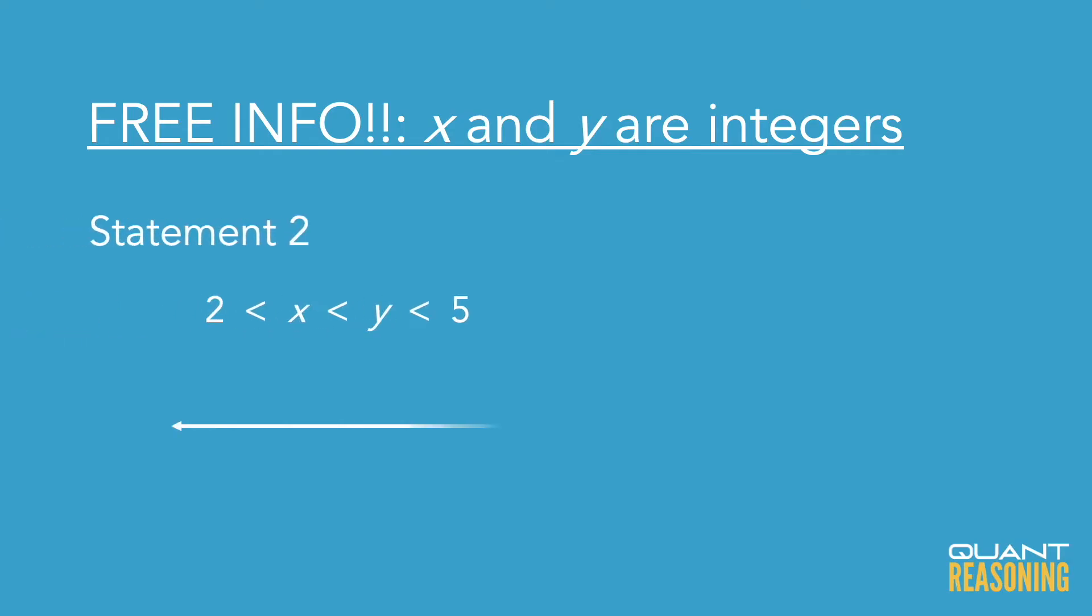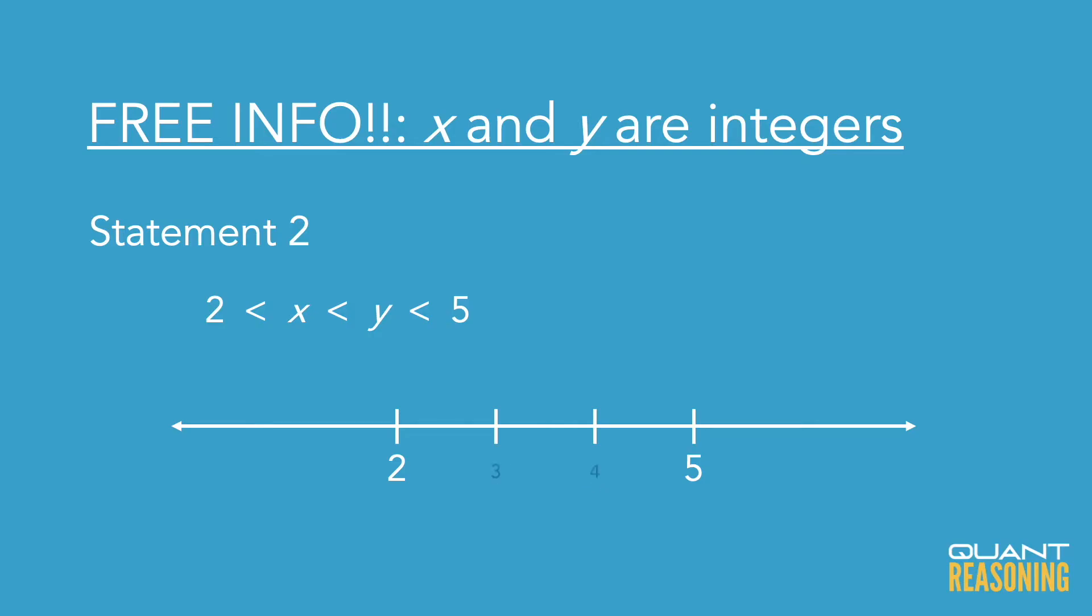Looking at the statements, I'm thinking statement two is probably easier to work with, so I'll start with that one. Given this inequality where we have on the number line two followed by X followed by Y followed by five, and remembering that X and Y must be integers, this is enough for us to find the values of X and Y. They must be three and four respectively.